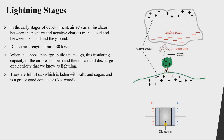Someone might ask how lightning occurs in trees since wood is an insulating material. Trees are full of sap in their core, and this sap is laden with salts and sugars, which are good conductors of electricity. The charges don't move through the wood itself but through the internal core, which is the sap containing salts and sugars.